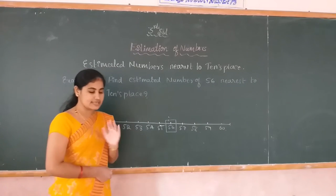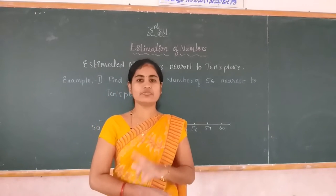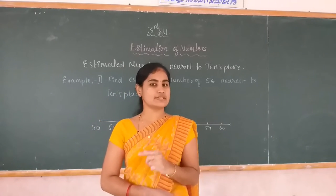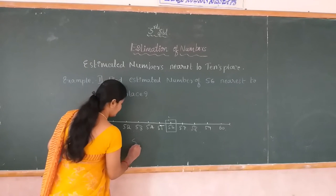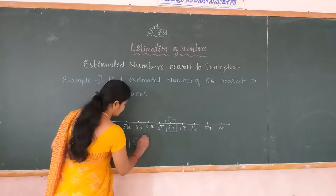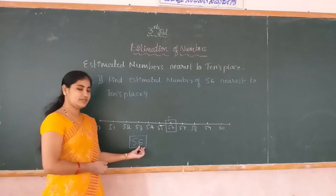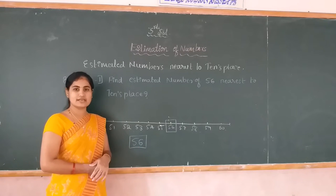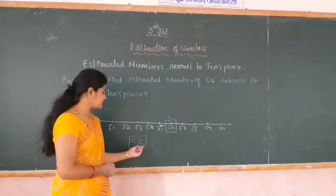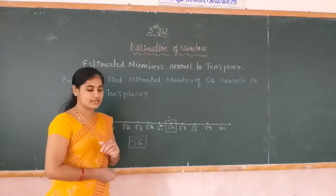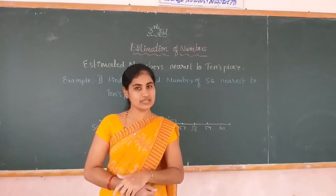Listen carefully. To find the estimated number of any number, first you observe the number present in the unit place. For 56, which number is in the unit place? The 6 is in the unit place and 5 is in the tens place. You must observe the unit place number. There are three conditions to write the estimation of numbers.